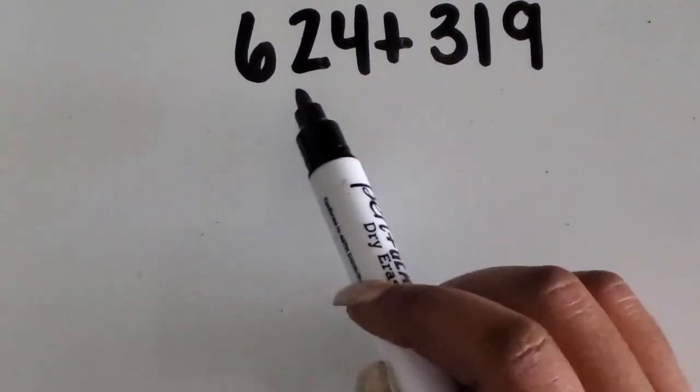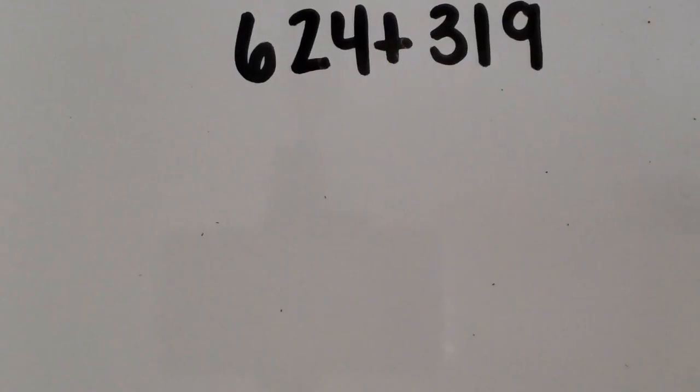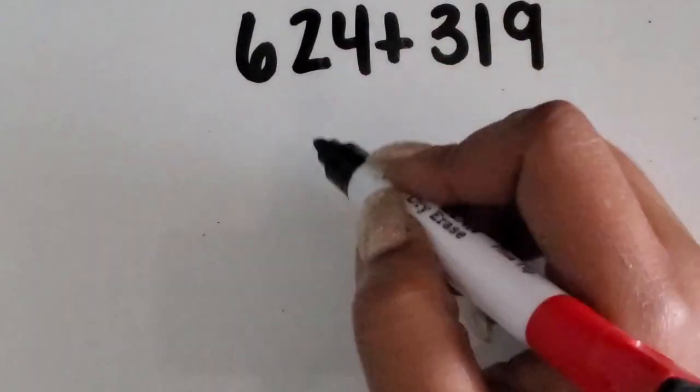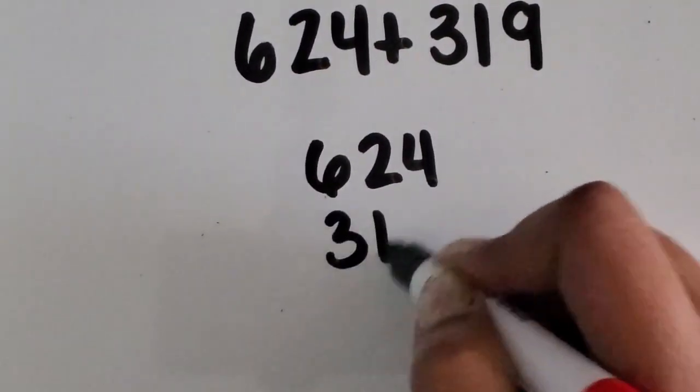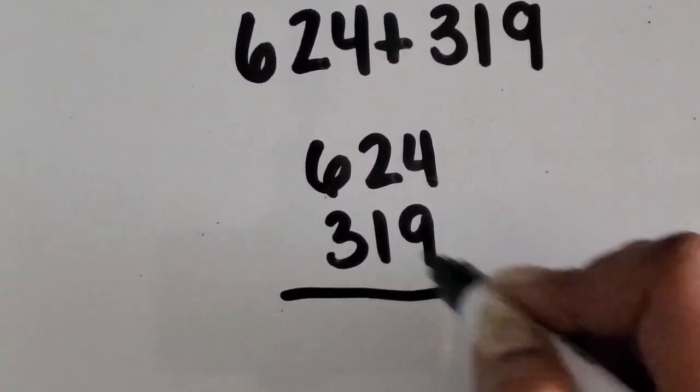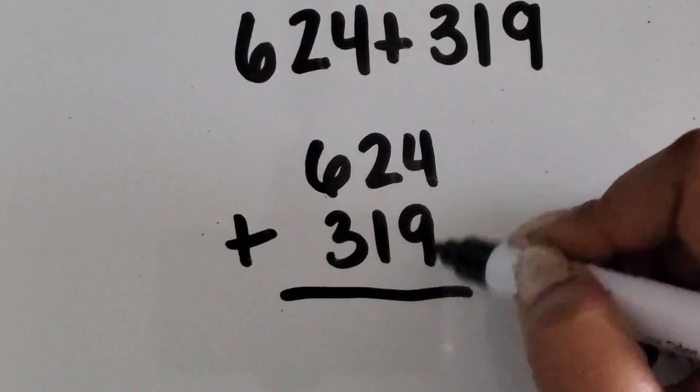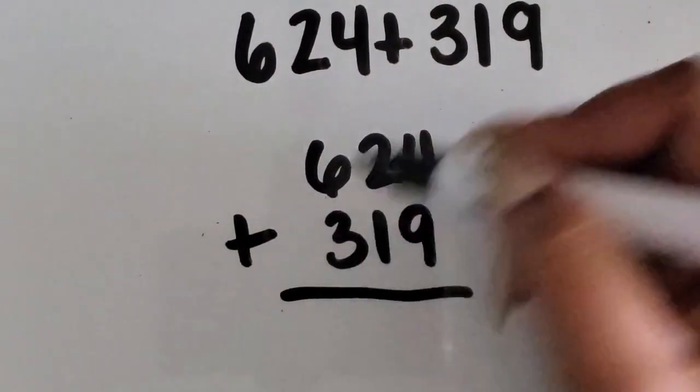We are going to be adding two three-digit numbers together using the partial sum strategy. We're going to start by writing the numbers vertically based on place value. So our ones are together, our tens, and our hundreds.